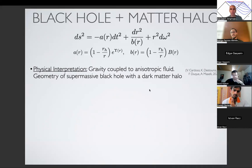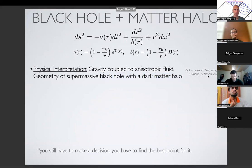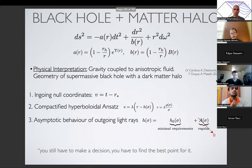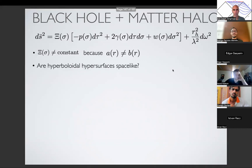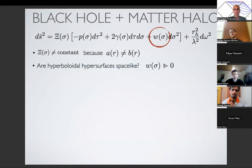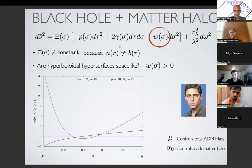I then tried another spacetime — one I've been working on recently with Vitor, describing a massive black hole with a dark matter halo. The important thing is that this spacetime has two functions A and B that don't agree. I followed the recipe: ingoing null coordinates, compactify the hyperboloid, choose the minimum requirement, simple compactification. But this spacetime has its feature — A and B are not the same. The tricky question is: are the surfaces spacelike? Is W positive everywhere? When I plot W for some parameters, it becomes negative. So the recipe wasn't working — I was again frustrated.